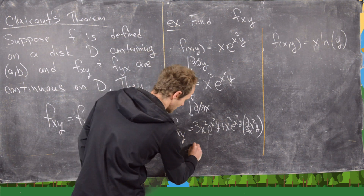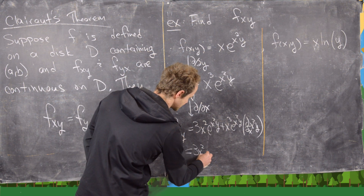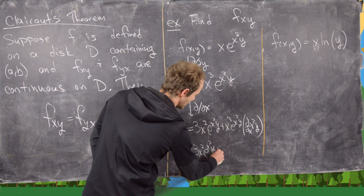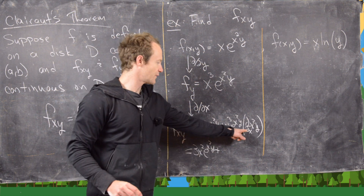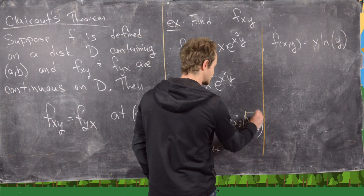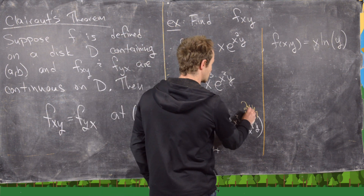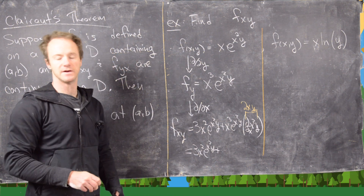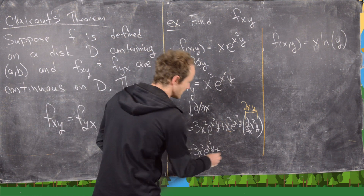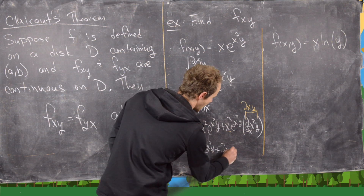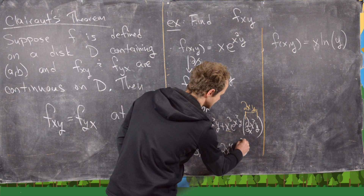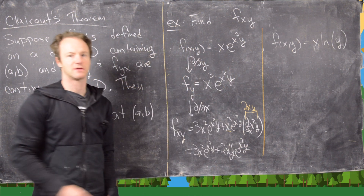Simplifying: we get 3x² · e^(x²y), and the derivative of x²y with respect to x is 2xy. Combining that with the x³ out front gives 2x⁴y · e^(x²y). So f_xy = 3x² · e^(x²y) + 2x⁴y · e^(x²y), and that's our mixed partial.